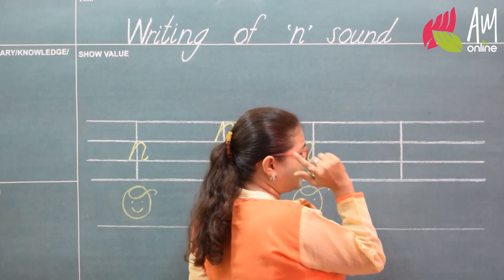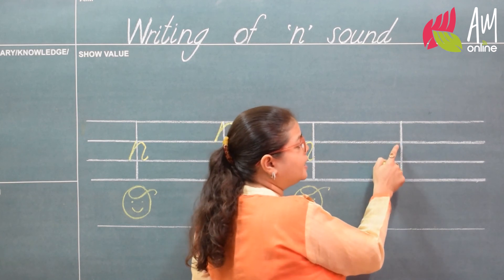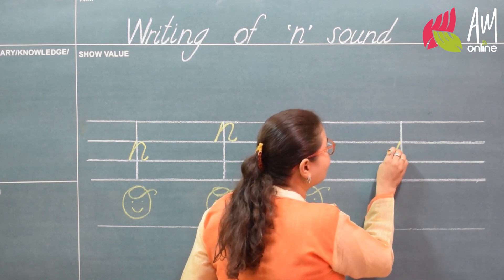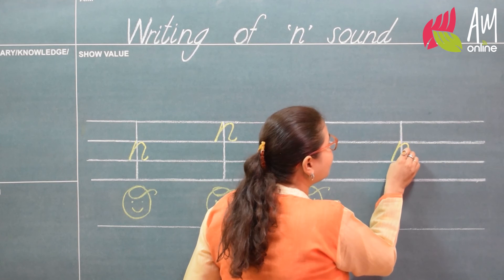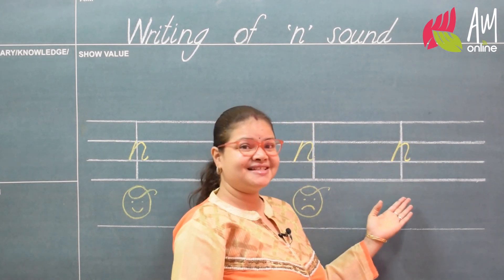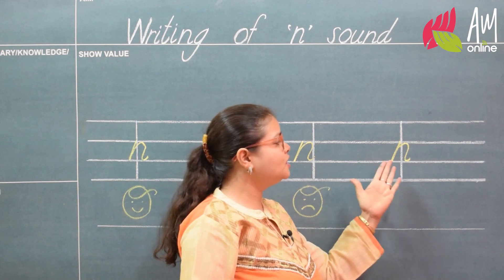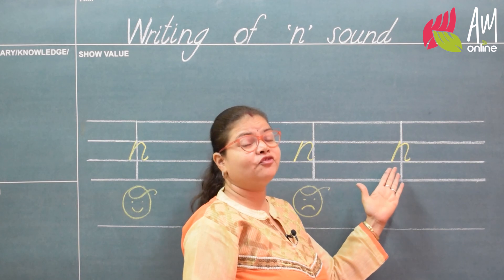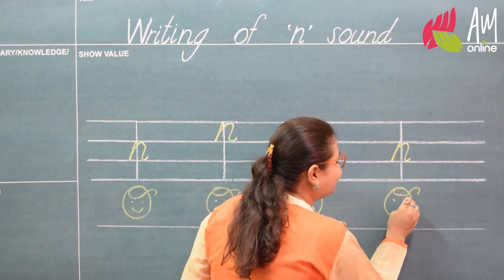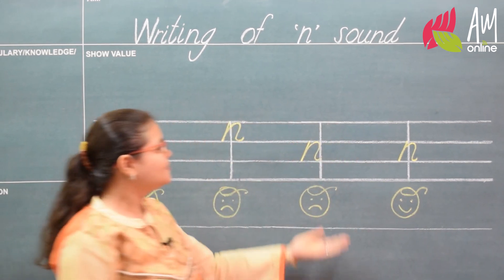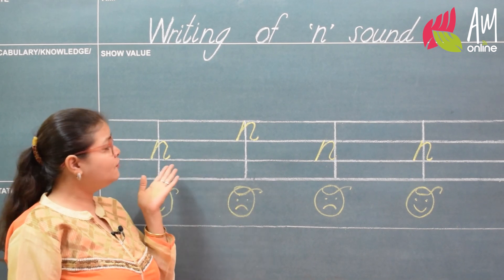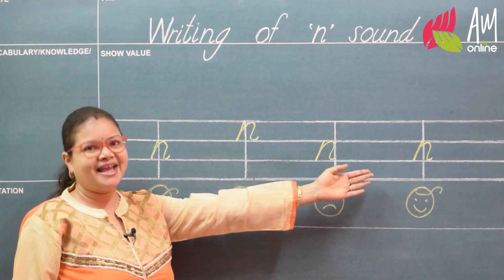Let's write it one more time, and remember from where I have to start. Middle start, slant down, go up, make a roof, come down, slant, and monkey tail. Wow, this time my na sound is in the perfect position with perfect formation! I have to give it a smiley face. That's how we have learned how to write the na sound with perfect formation and perfect position. Happy writing!